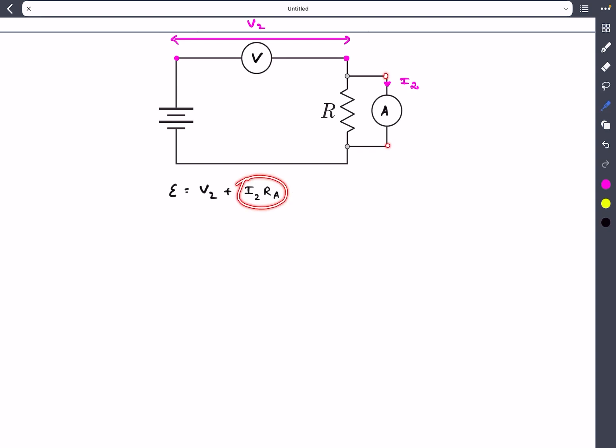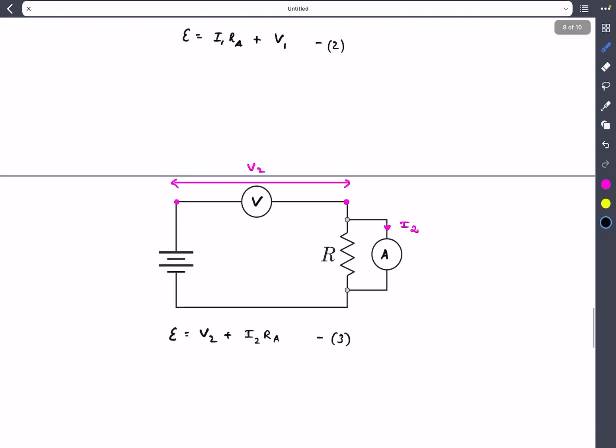I₂ times Rₐ is the current in this branch times the resistance of this branch, which gives the potential drop across these two points. That plus the potential drop across the voltmeter should equal the EMF of the battery. This will be our third equation.